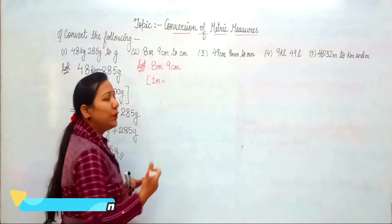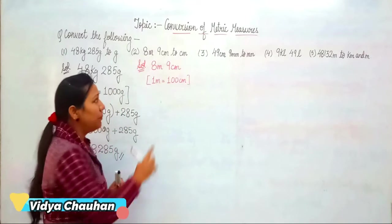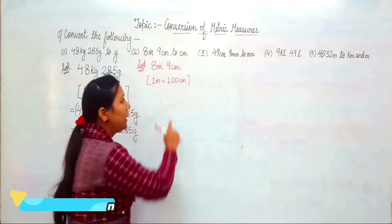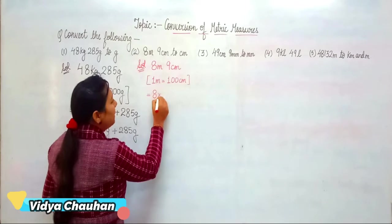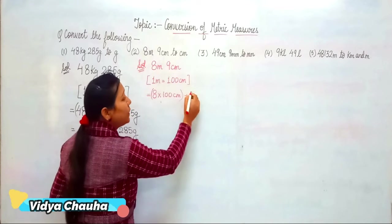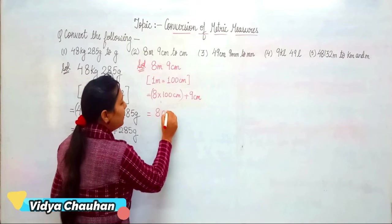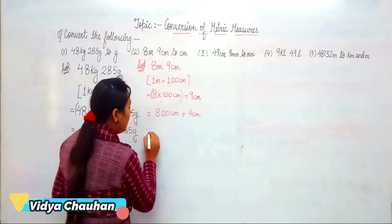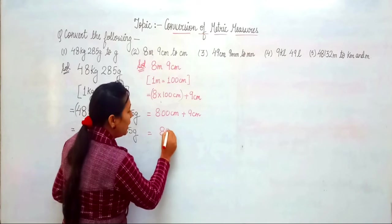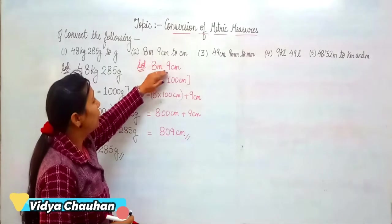The relation is: 1 meter = 100 centimeters. Since 1 meter makes 100 centimeters, 8 meters = 8 × 100 = 800 centimeters. Plus the second term: 9 centimeters. So 800 + 9 = 809 centimeters.